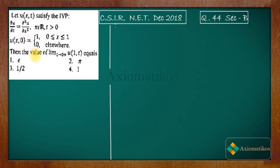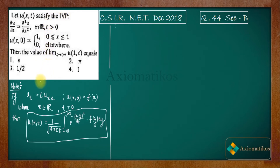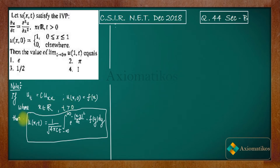What I will do is tell you a generalized formula which can deal with this kind of problem, and after that you can easily solve it. This is the formula I am talking about: if we have this kind of heat equation with x in ℝ and t greater than 0, then u(x,t) is given by this formula.